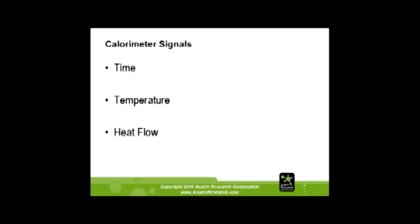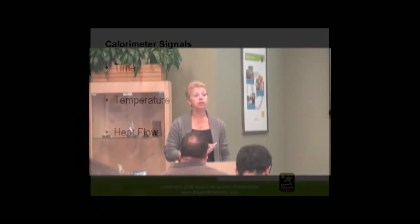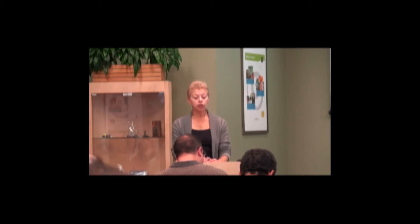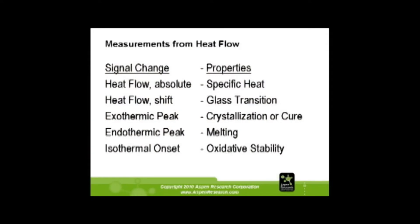These are some of the signals that you can use. You can do your experiment in time — you can tell it to sit at a temperature for an hour and watch what happens. You can program it up and watch in temperature: 10, 20, 30, 40 degrees a minute. Or you can do it as heat flow and watch the joules per gram change. If you want to run heat flow absolute, you'll get a specific heat measurement. Heat flow shift gives you a glass transition. Exothermic peaks give you crystallization. Endothermic peaks indicate melting. And isothermal onset shows oxidation stability.